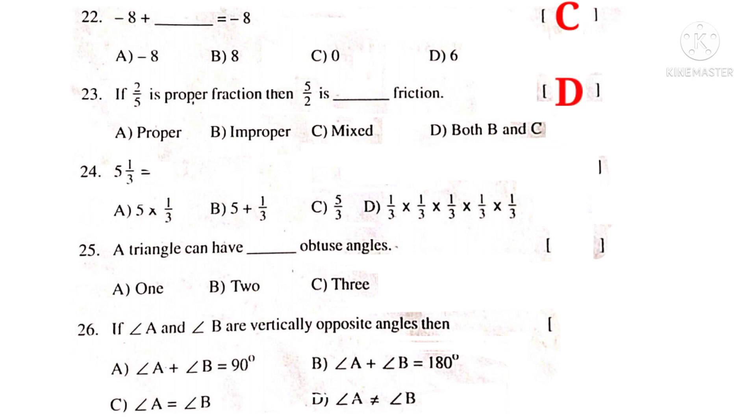5 1 by 3 is a mixed fraction where 5 is a whole number and 1 by 3 is a proper fraction. It is the sum of the 2. So, 5 plus 1 by 3 is the correct answer. So, the correct choice is B.